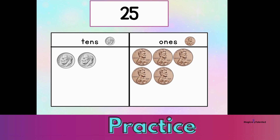I will count to check my work: ten, twenty, twenty-one, twenty-two, twenty-three, twenty-four, twenty-five. What number did I count to? If you said twenty-five, you are correct. In unit form, we would say two, ten, five.